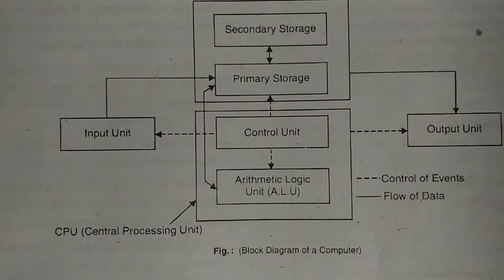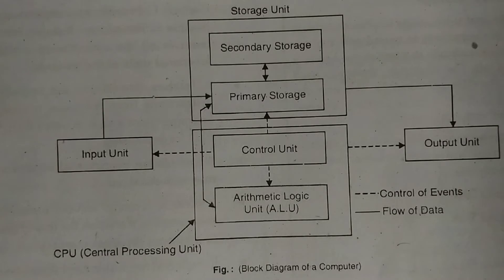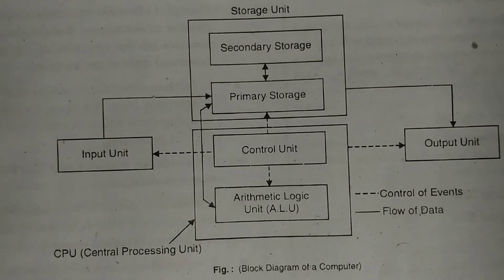If you talk about input — the definition of a computer is an electronic device which takes input, processes it, and sends it as output. Input accepts or reads the list of data and instructions from the user. It takes the input through input devices, converts the data and instructions into computer-acceptable form, and supplies the converted data and instructions into the computer system for further processing.